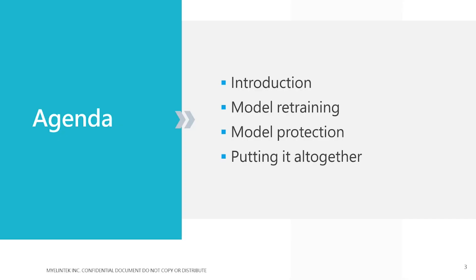This talk will cover four parts. It starts with a brief introduction about why we need to retrain and protect our models. Next, we talk about how to retrain a model and manage model versions effectively, followed by some practical considerations on model protection and how to implement it. Last, we will put them all together with an automated pipeline and demonstrate our sample application.